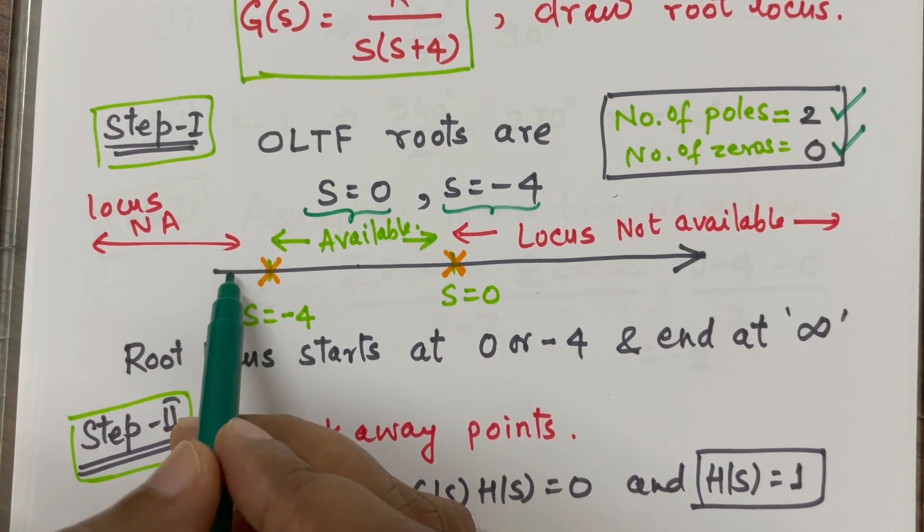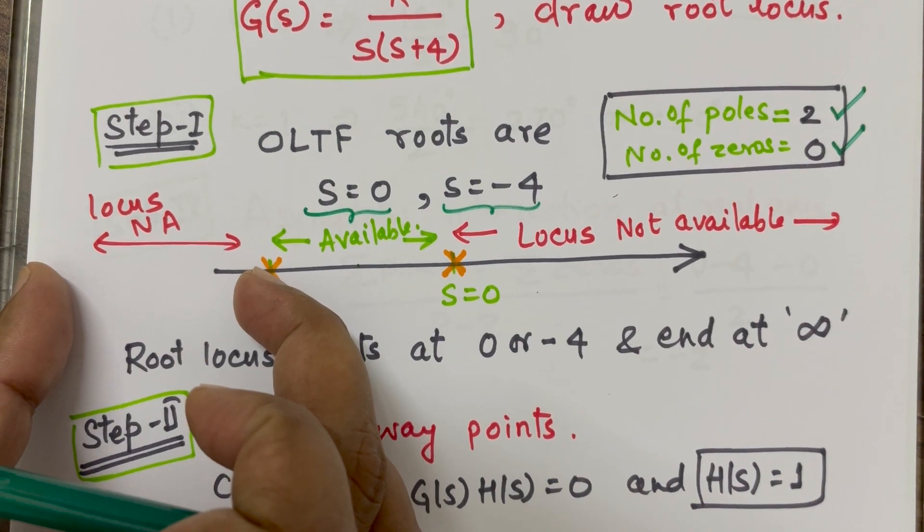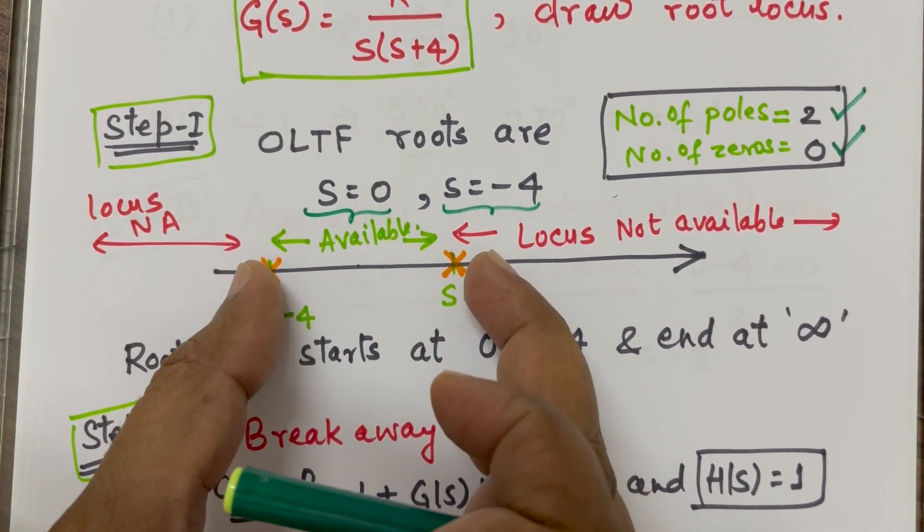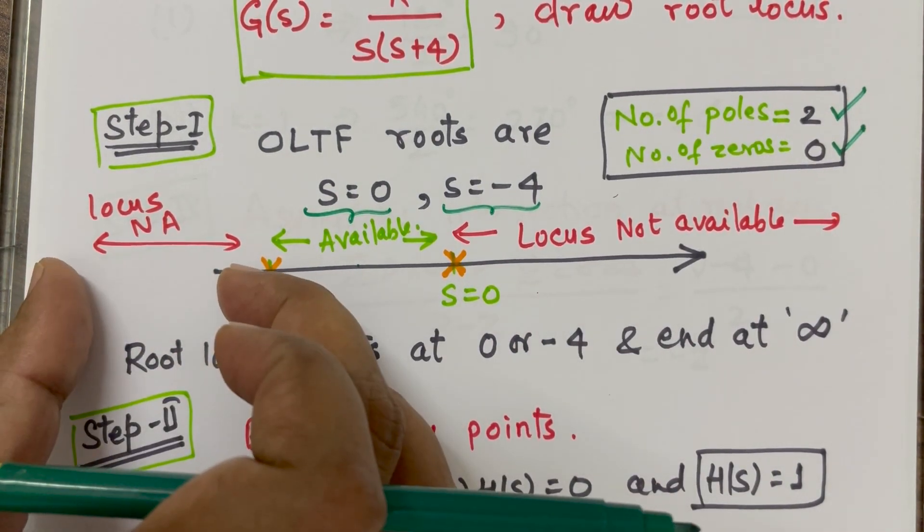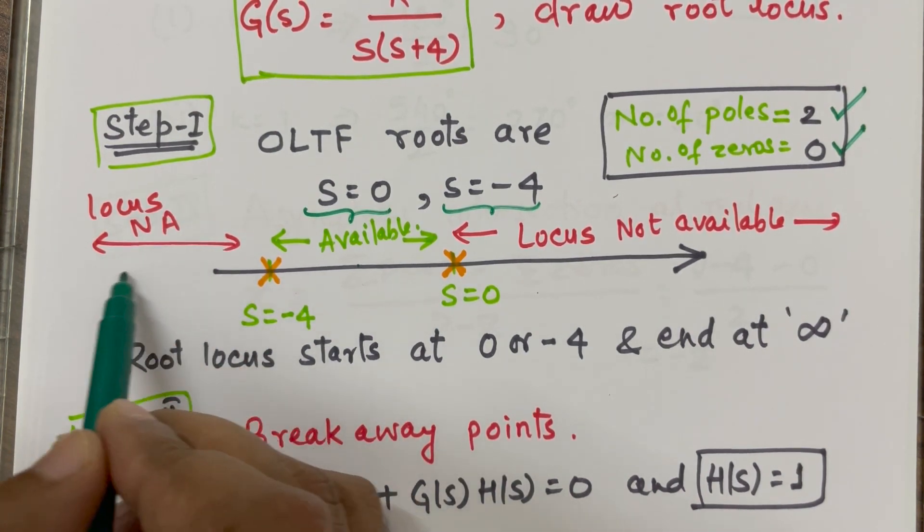When I come to this region, I have one and two. Two roots in the right side. If I look at this region, there are two roots in the right hand side. That means, there will not be any root locus available in this region.